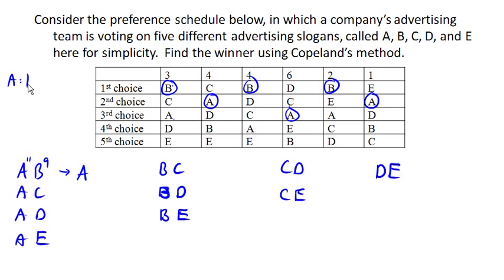So next, let's compare A versus C. So comparing A versus C. C, C, C, C, C, A, A. So A has 3 preferring A. 17 are preferring C. And so C is gonna get 1 point here.